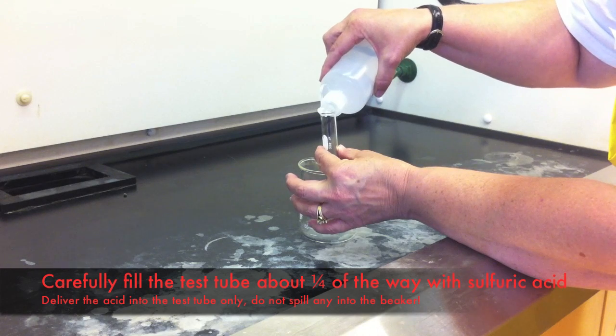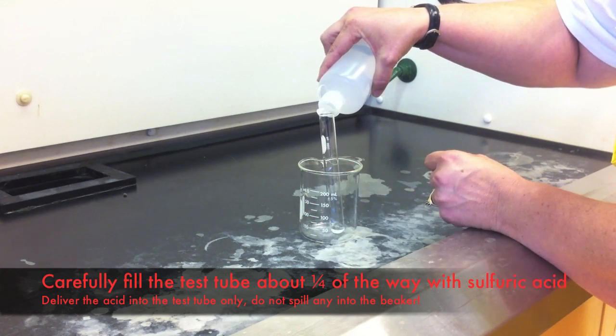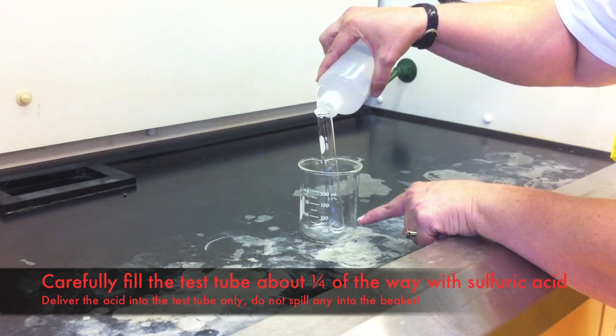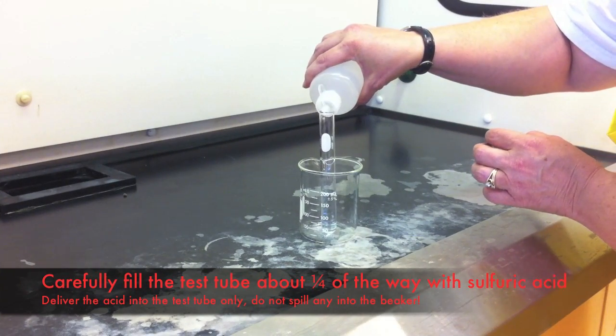You will need about a quarter of a test tube full of sulfuric acid. You will find the sulfuric acid in the fume hood. Carefully add it to the test tube and do not get any of it into the beaker.